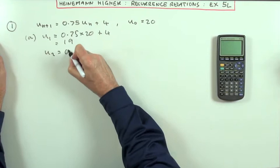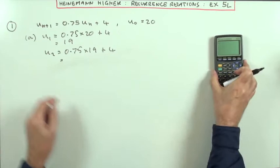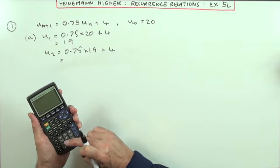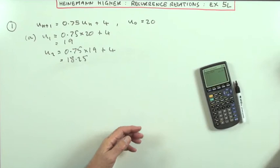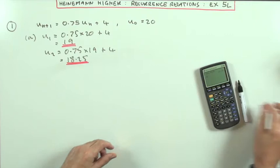Then I can get to U₂ from U₁ by doing 0.75 times 19 plus 4. So we'll just put in 19 times 0.75 plus 4 and get 18.25. So that'll be the answer to the first one.